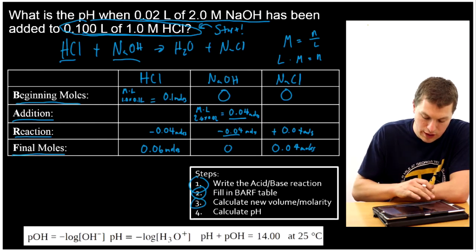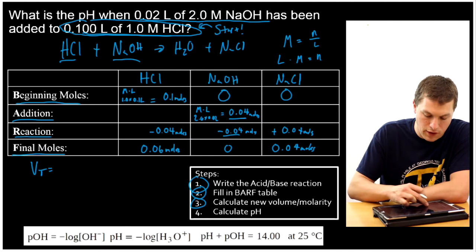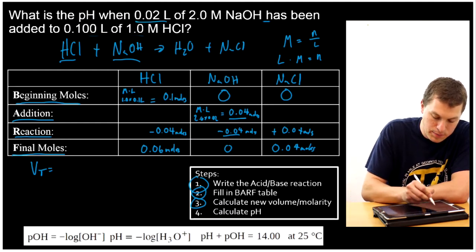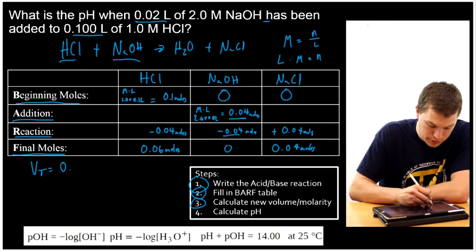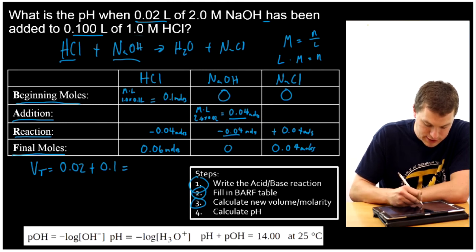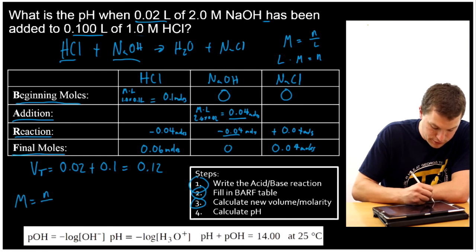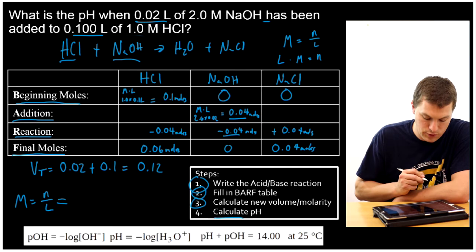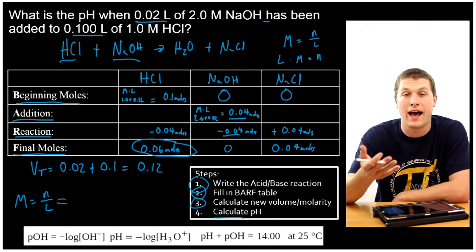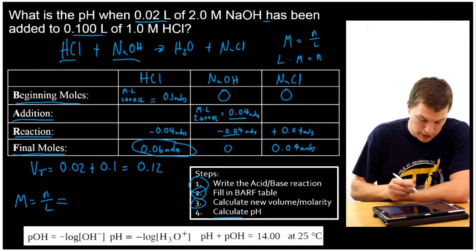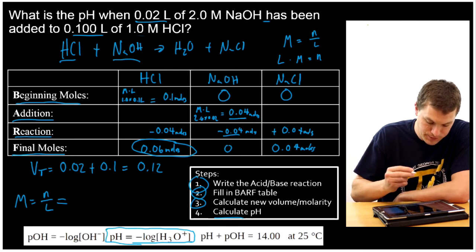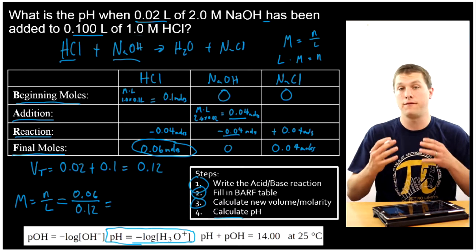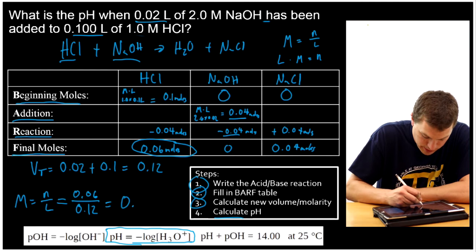Now I'm ready to calculate my new volume and molarity. My new volume is the volume I added plus the volume I started with: 0.02 plus 0.1 equals 0.12 liters. My molarity equals moles over liters, and I care about the moles of HCl because that's my strong acid — every mole of HCl gives me a mole of H3O+, which I need for pH. So 0.06 moles divided by 0.12 liters gives 0.5 molar.